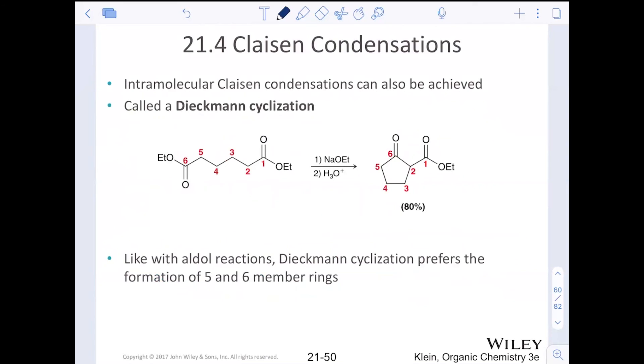Intramolecular Claisen actually just have a very fancy name. It's called the Dieckmann cyclization. Like aldol reactions, this cyclization prefers five and six-membered rings. It occurs the exact same way. We form the exact same style things, beta keto esters.